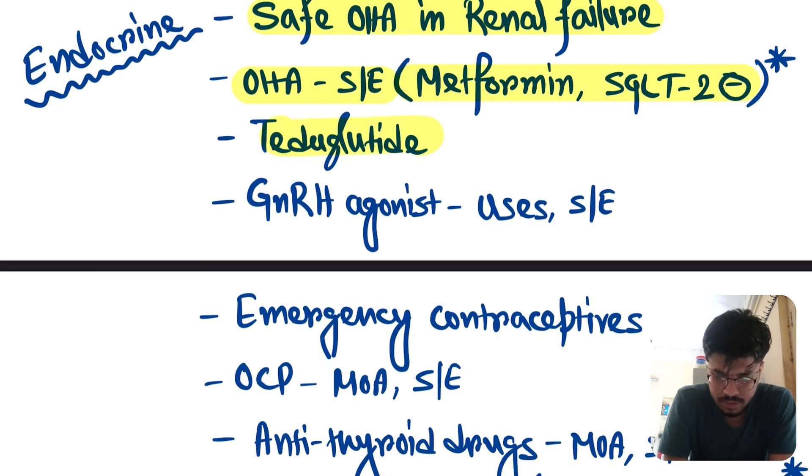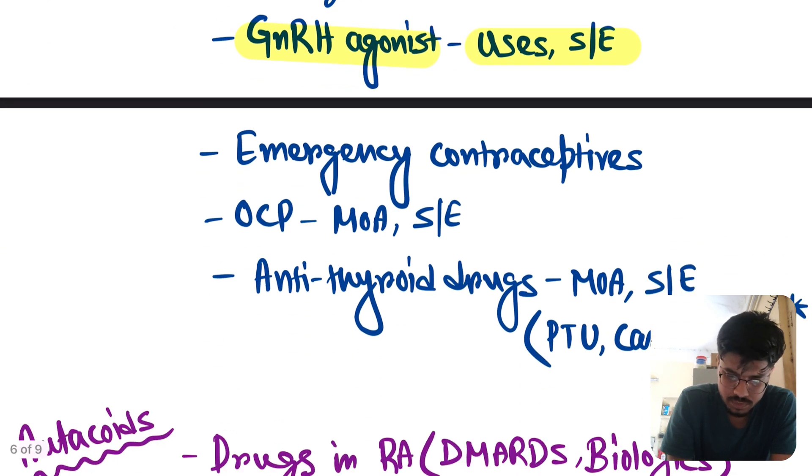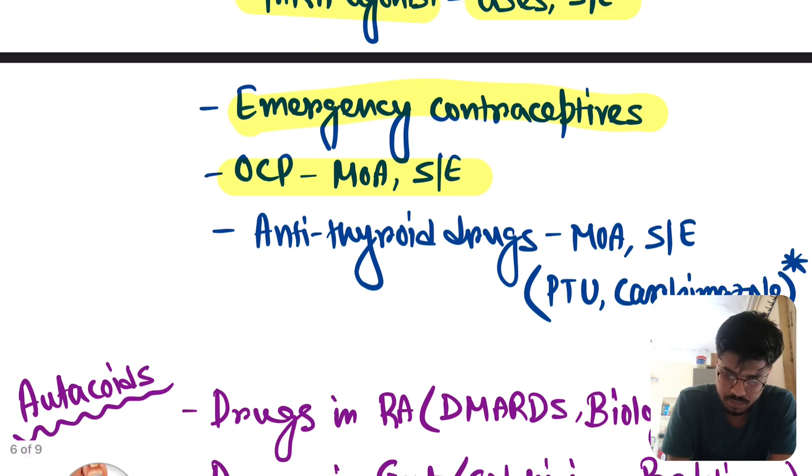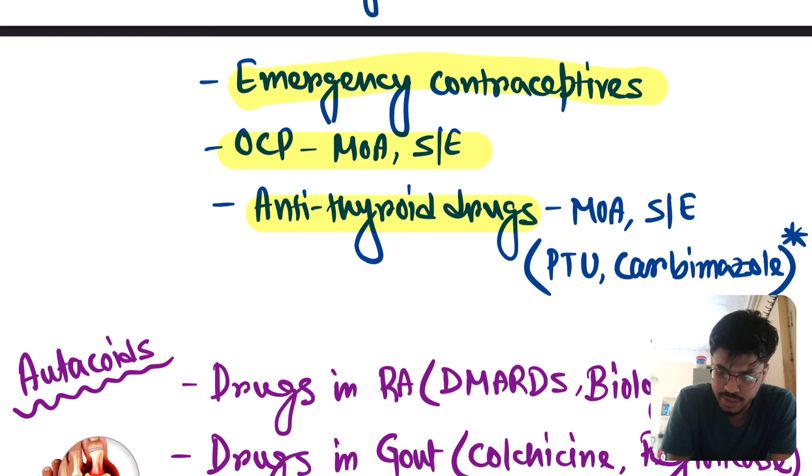Thiazolidinediones. GnRH agonist, uses and side effects. Important topics. Emergency contraceptive, OCP, mechanism and side effects. Very very important. Antithyroid drugs. PTU and carbimazole. This is again an important topic.